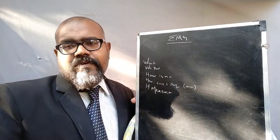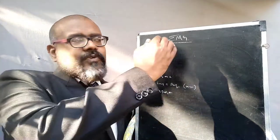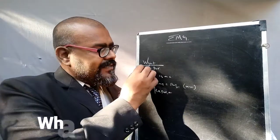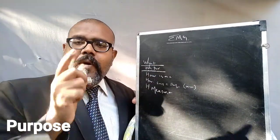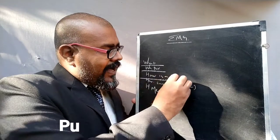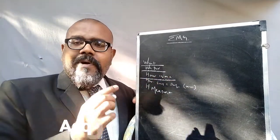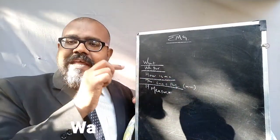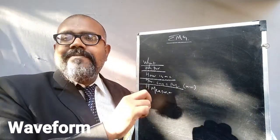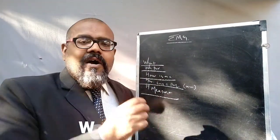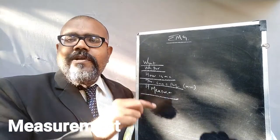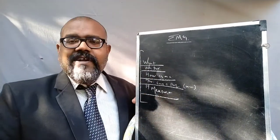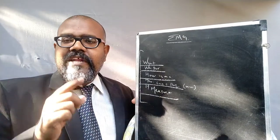So, Electromyography. The things we are going to discuss today about EMG are: What is EMG? What is the purpose of EMG? How is EMG acquired? How is EMG performed — that is the EMG waveform. And from that waveform, what is the thing we need to measure? These are the five different questions we need to answer today.